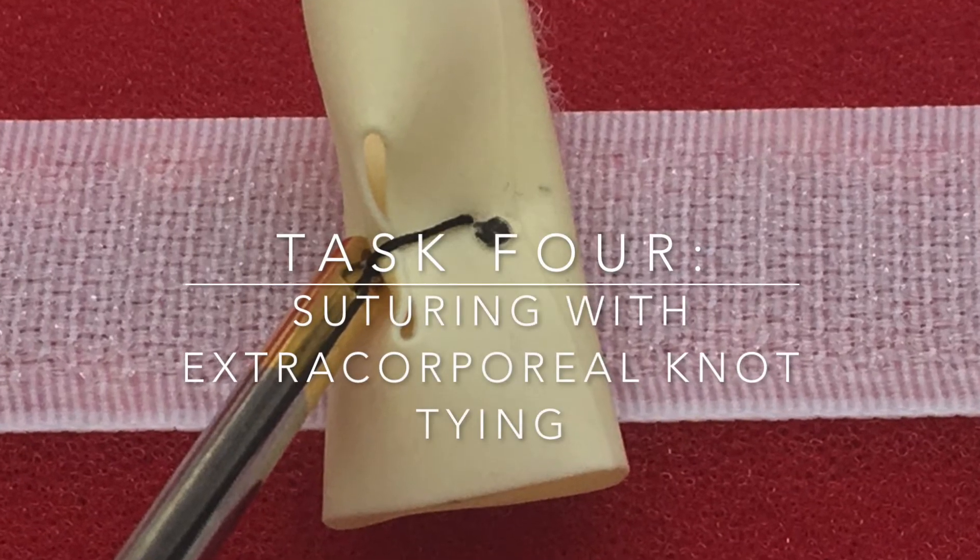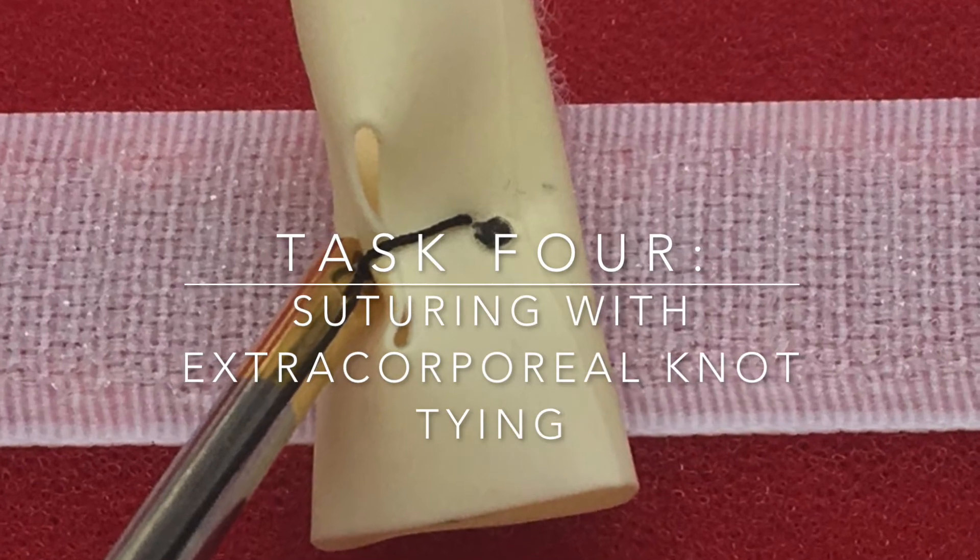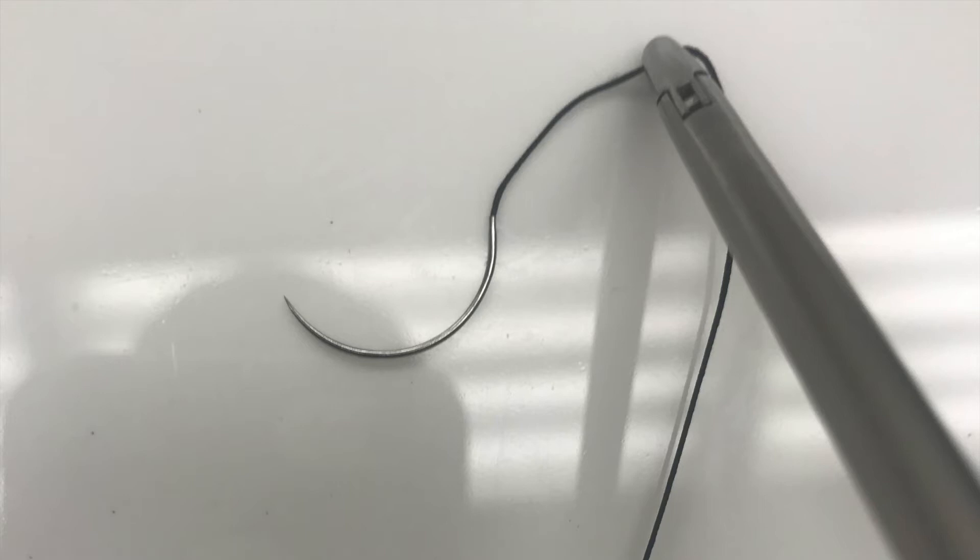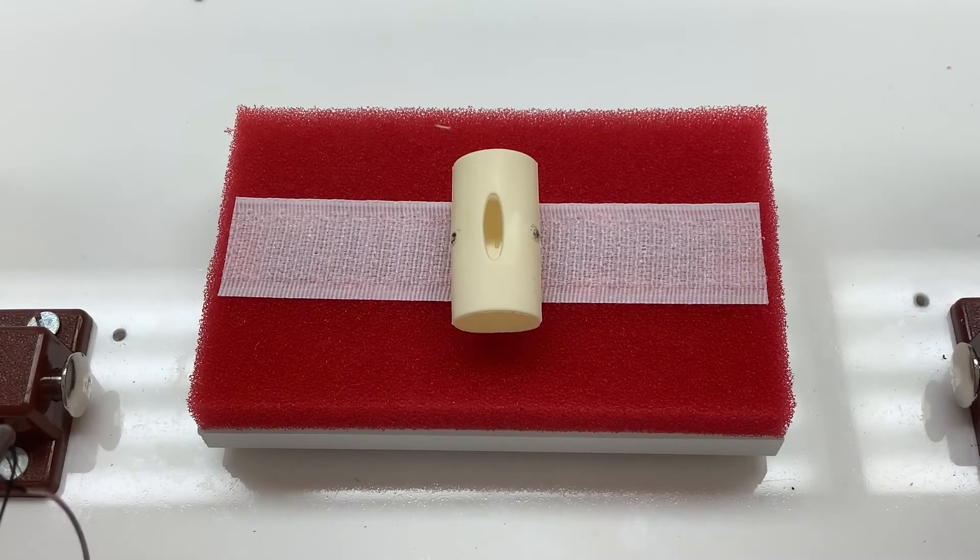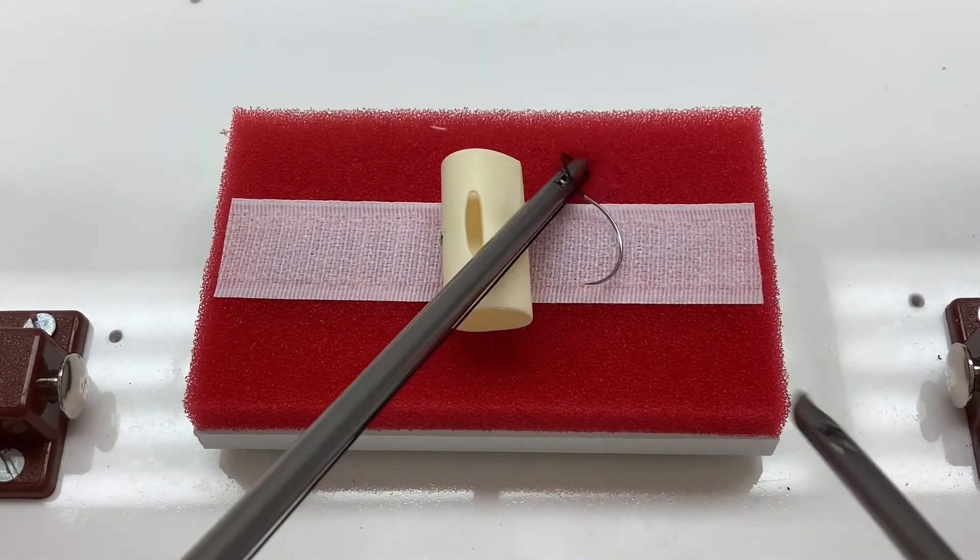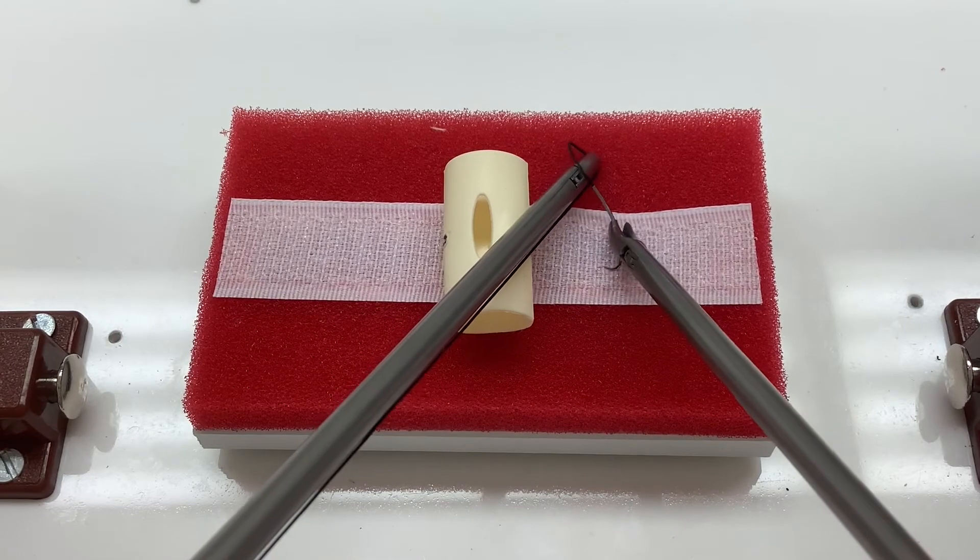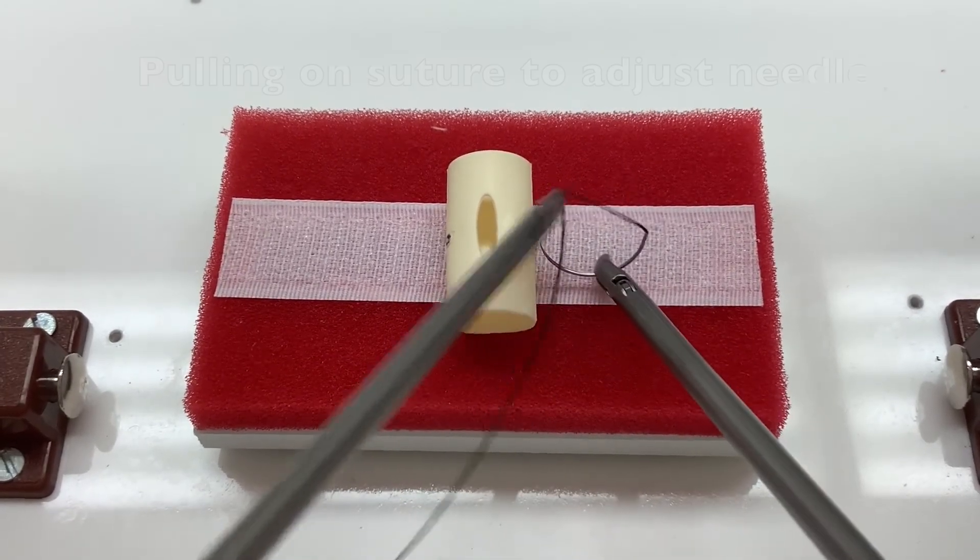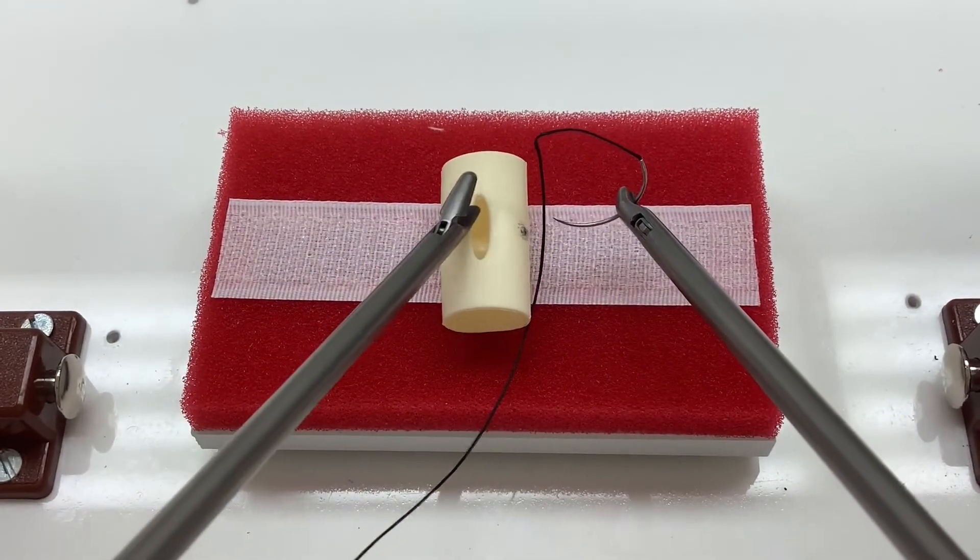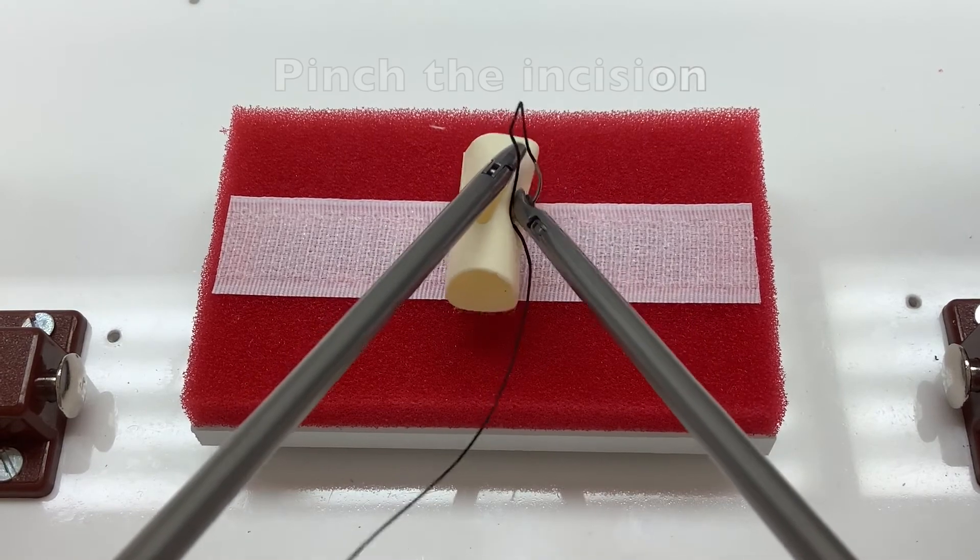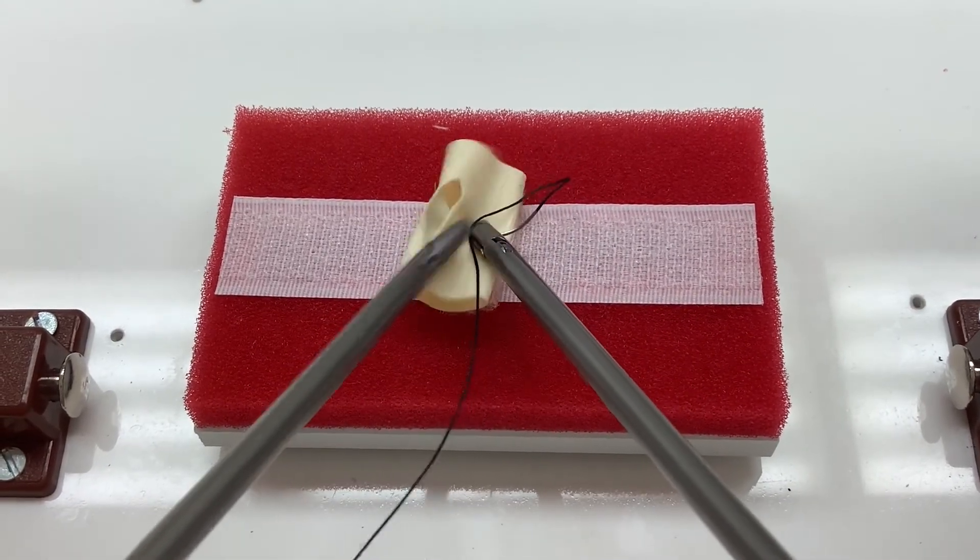Task 4, Suturing with Extracorporeal Knot Tying. Next, we pinch the top of the incision to approximate the markings. This makes it easier to go through both targets in one motion.